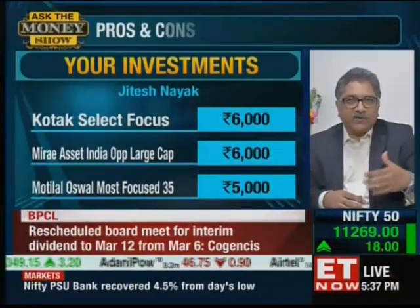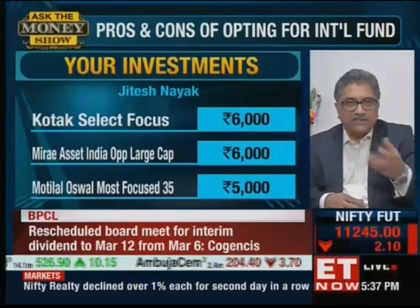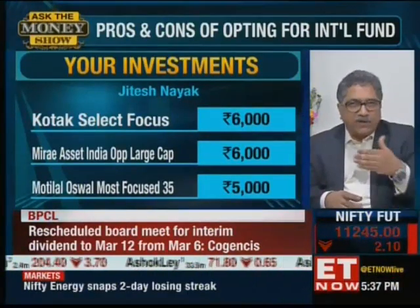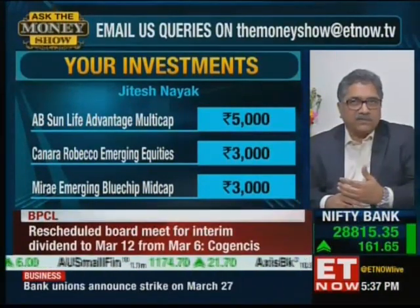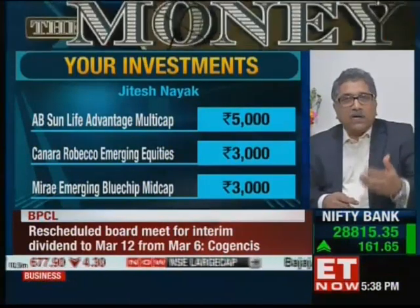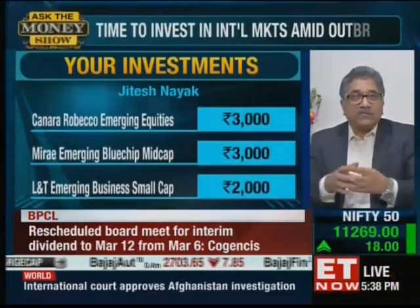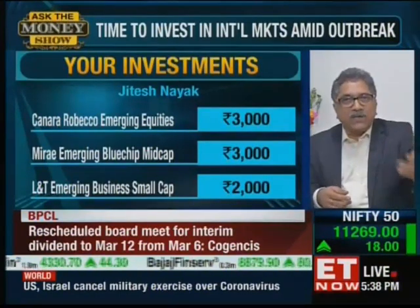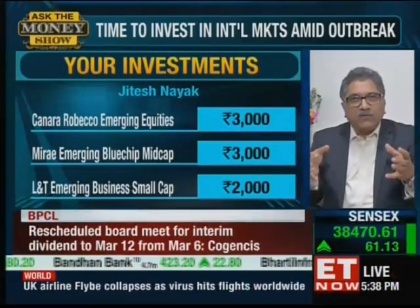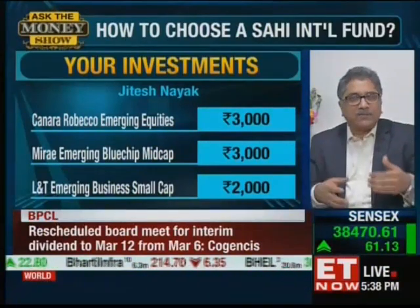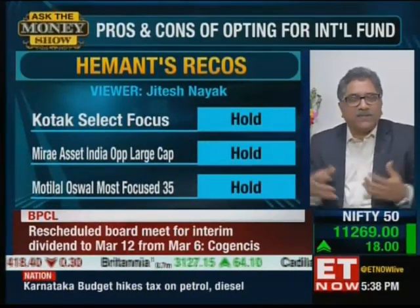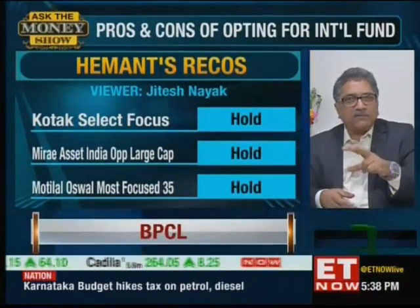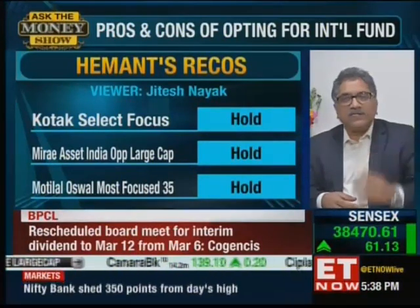Broadly, the portfolio is good, but there is a case for reducing the number of funds given the overall investment amount per month. I recommend he exit two funds: ABSL Advantage Fund and L&T Emerging Fund. The amounts from those two should be redistributed to the remaining funds. Having an over-diversified portfolio creates problems in monitoring and doesn't benefit returns. So exit those two funds, reallocate the amounts to existing funds, and he should be fine.